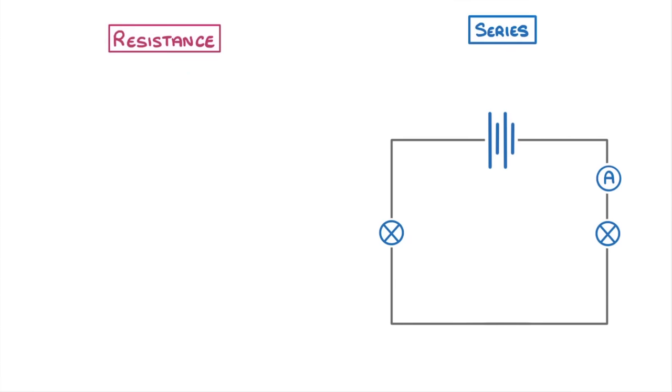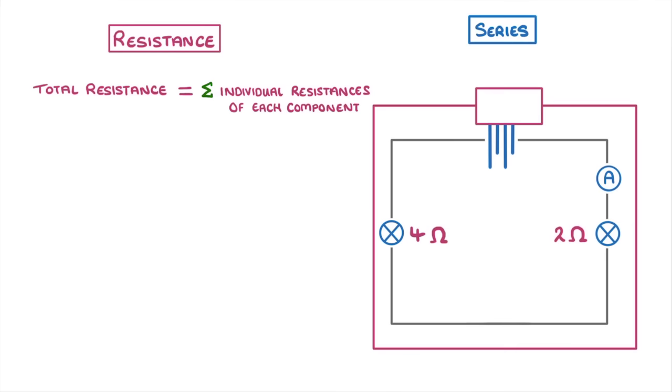Resistance is similar to potential difference, in that the total resistance is just the sum of the individual resistances of each component. This green symbol just means sum, so total, and you sometimes see it in physics and maths papers. As an example, let's imagine that this lamp on the left had a resistance of 4 ohms, and the other one had a resistance of 2 ohms. The total resistance of our circuit would have to be 4 plus 2, so 6 ohms.